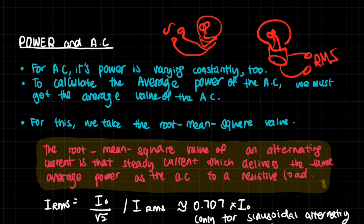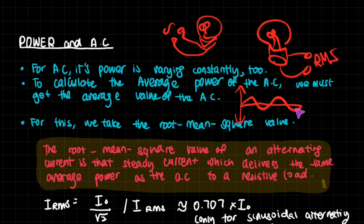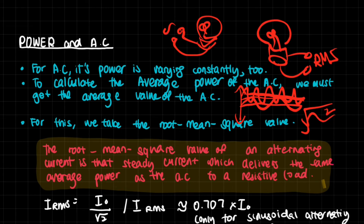The RMS is important because AC is constantly fluctuating and we need a special method to find this value. The simple average doesn't work here because the current is sinusoidal — half of it is negative — so adding everything together just gives zero, making the mean meaningless. Instead, we derive the RMS by squaring the alternating current, taking the mean of that squared value, then taking the square root.